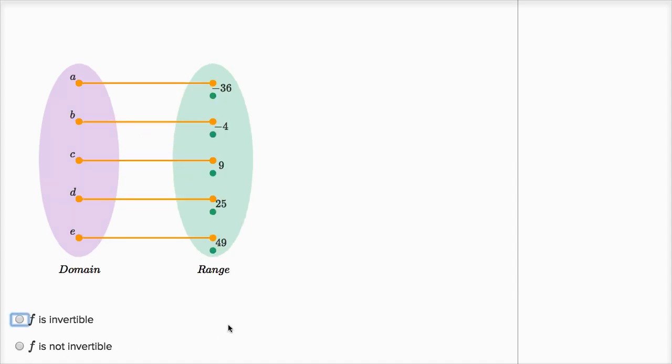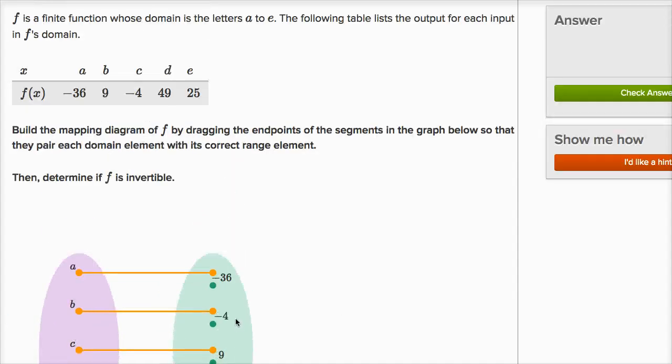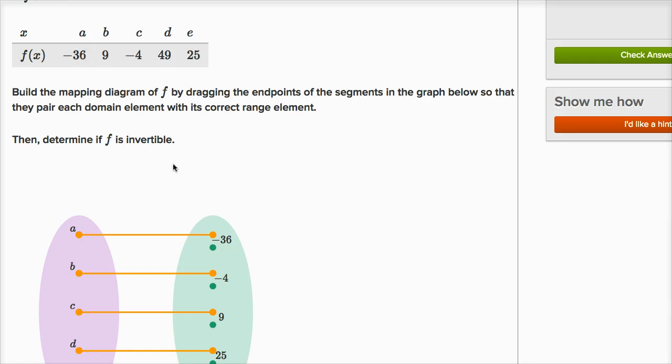Let's do another example. So here, this is the same drill. We have our members of our domain, members of our range. We can build our mapping diagram. A maps to negative 36. B maps to nine. C maps to negative four.